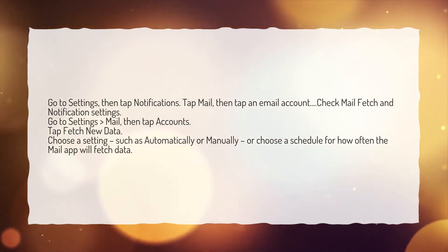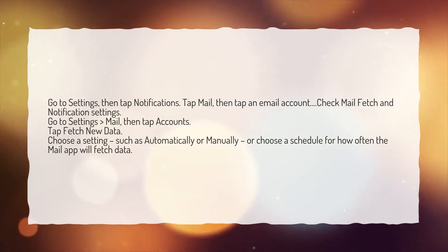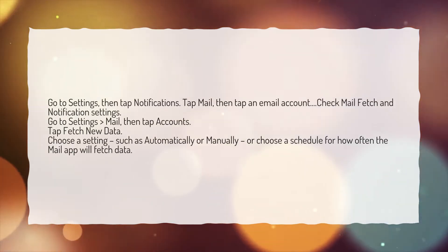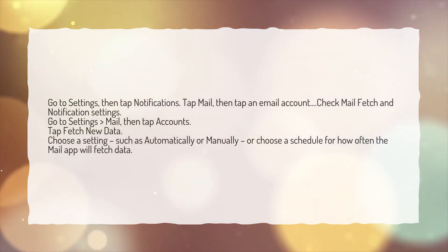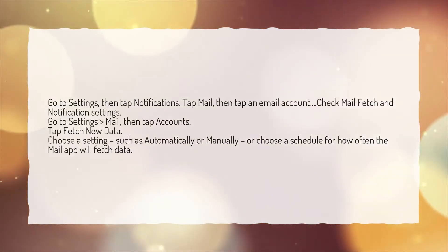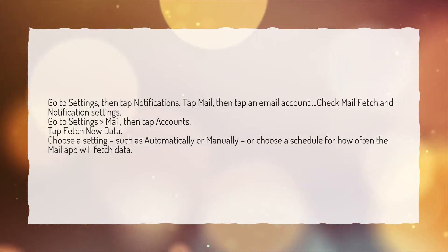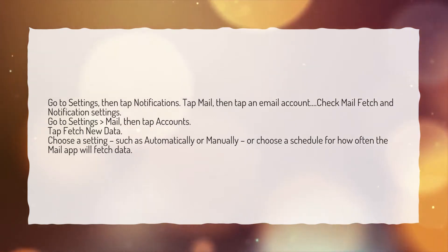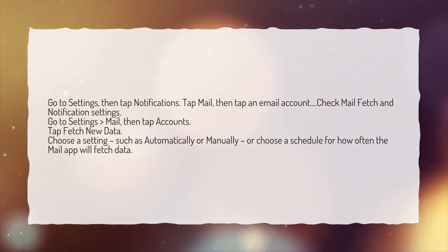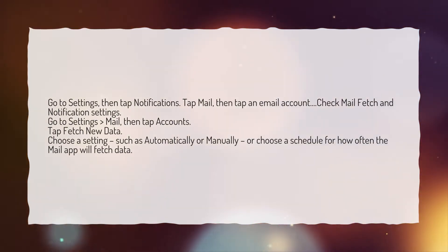Check mail fetch and notification settings. Go to settings, mail, then tap accounts. Tap fetch new data. Choose a setting, such as automatically or manually, or choose a schedule for how often the mail app will fetch data.